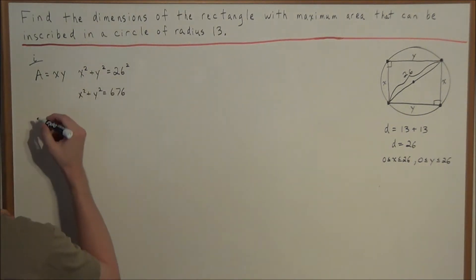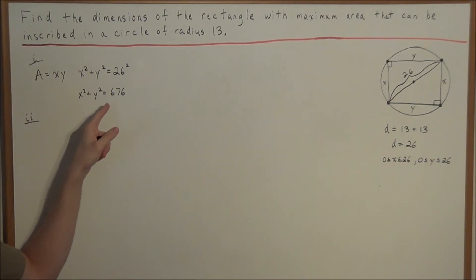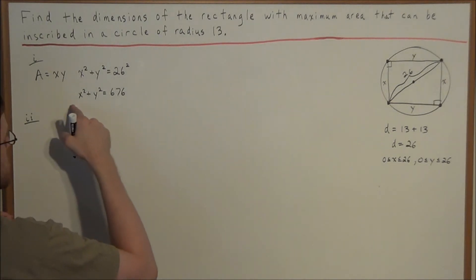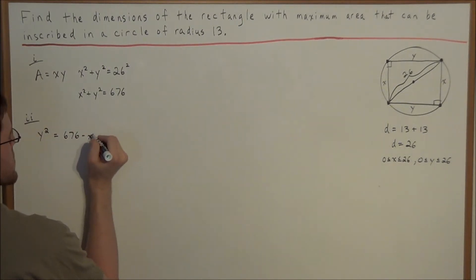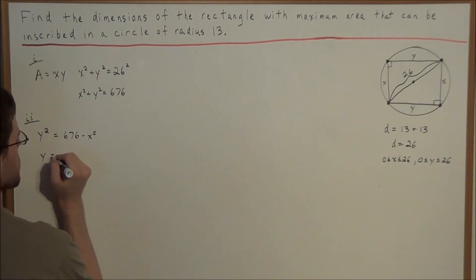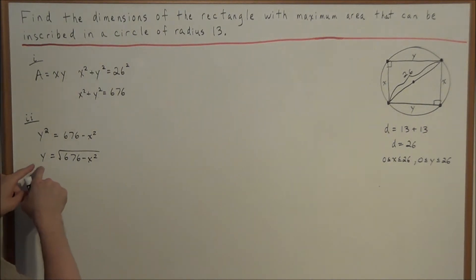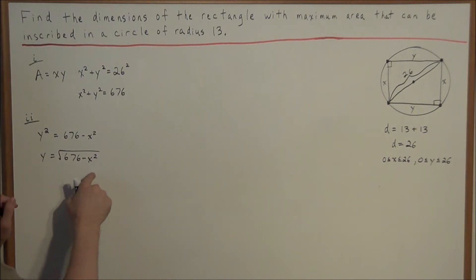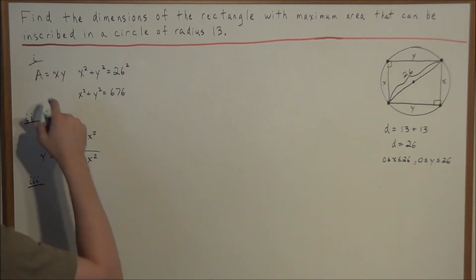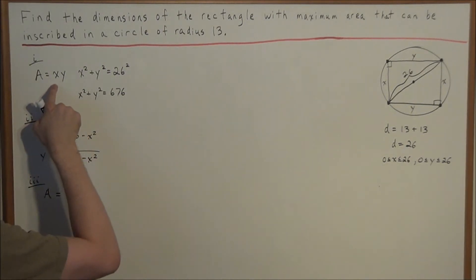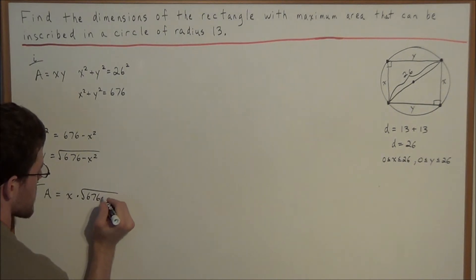Now we're going to use these two equations to set up a function of x. From x squared plus y squared equals 676, we solve for y by subtracting x squared from both sides, giving us y squared equals 676 minus x squared, so y equals the square root of 676 minus x squared. We substitute this value of y into the area equation, giving us area equals x times the square root of 676 minus x squared.